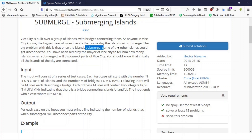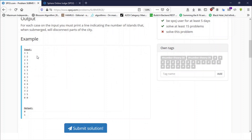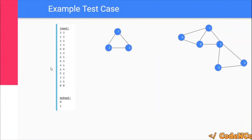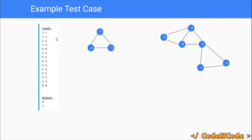If I show you the example test case: the first example has three nodes and three edges. Node one is connected to two, two is connected to three, and one is connected to three. If any city is submerged, the other two are still connected via the remaining path. So the answer is zero in this test case — basically there are no articulation points.